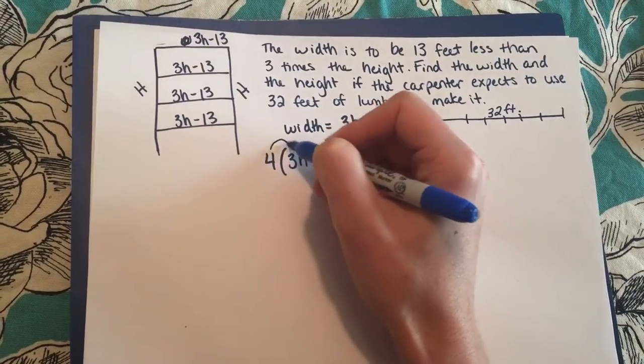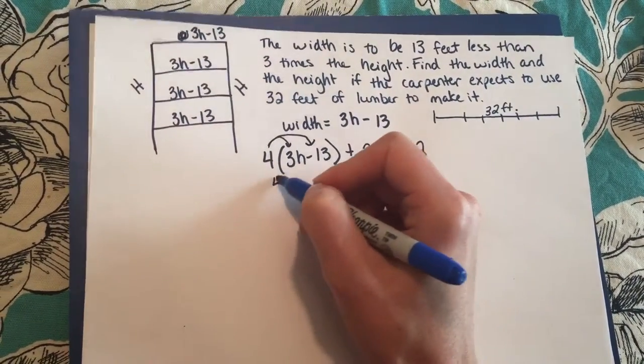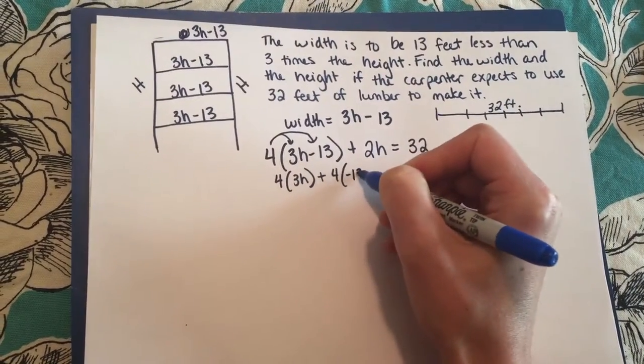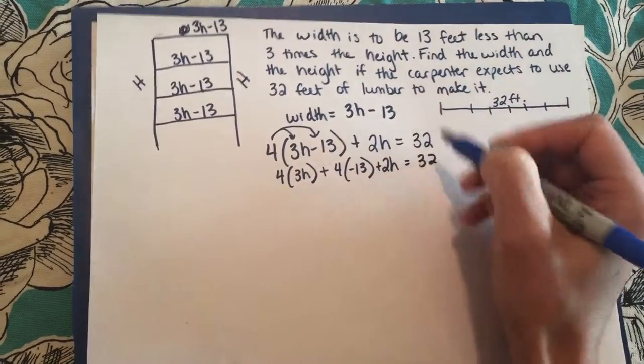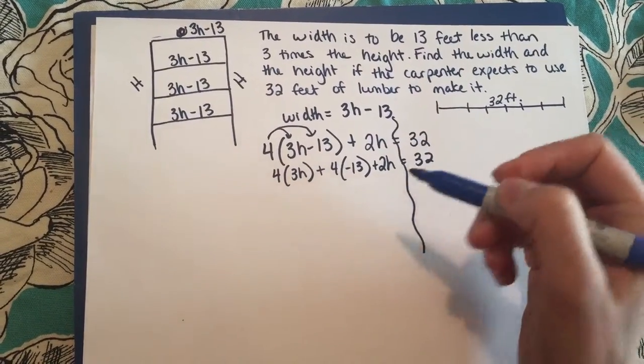So now I'm going to do the distributive property and the distributive property says that this is the same as saying 4 times 3h plus 4 times negative 13 plus 2h equals 32. Notice that I'm keeping my equations really nice and lined up.